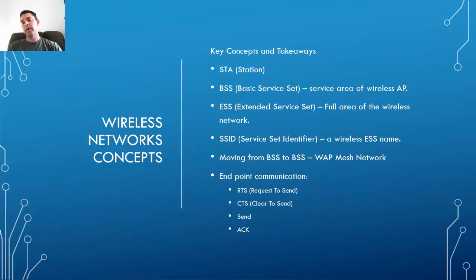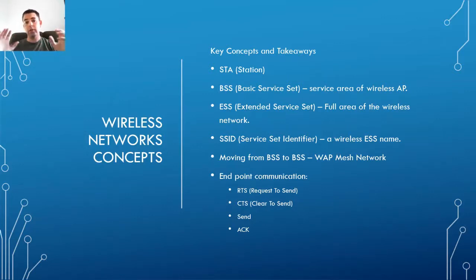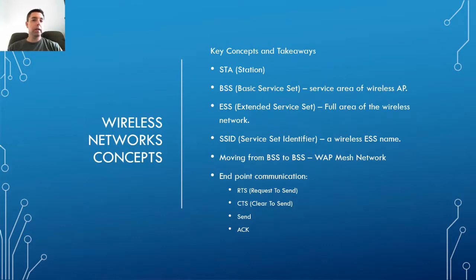STA means station — any device that sends and receives on the wireless. Then you have the Basic Service Set, or BSS. In an ESS, or Extended Service Set, Wi-Fi covers the entire service area — for example, a whole campus. Within that ESS, there are multiple BSSs. Each AP sends out a signal and creates a BSS, servicing devices within its range.